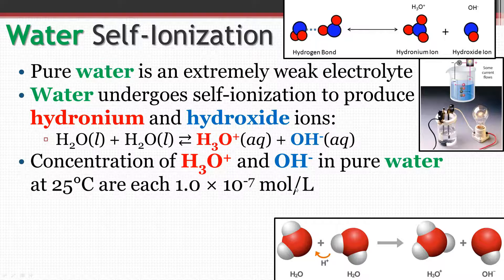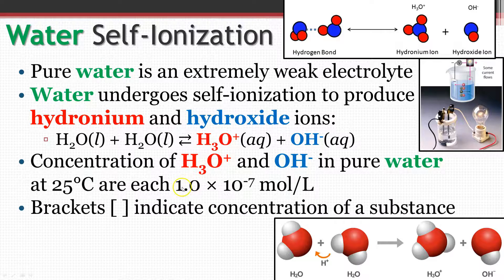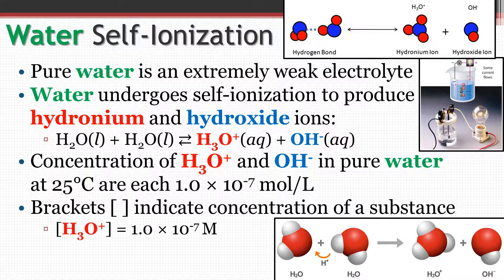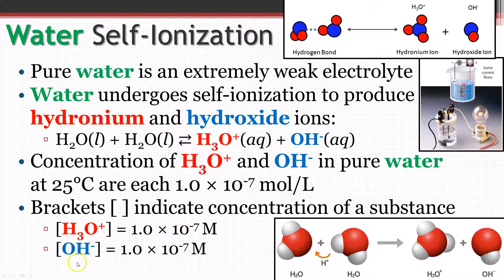That's not a very high concentration, but in pure water they are both going to be equal to that. Now, some notation for how we're going to be doing stuff for the rest of the year: brackets always indicate the concentration of a substance. So when I have brackets around the hydronium cation, that's saying the concentration of hydronium is 1.0 × 10⁻⁷ molar. The concentration of the hydroxide anion is also going to be 1.0 × 10⁻⁷ molar. Anytime you see brackets, that indicates concentration.